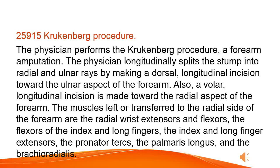Krukenberg procedure: the physician performs this forearm amputation by longitudinally splitting the stump into radial and ulnar rays, making a dorsal longitudinal incision toward the ulnar aspect of the forearm and a volar longitudinal incision toward the radial aspect. The muscles left or transferred to the radial side are the radial wrist extensors and flexors, the flexors of the index and long fingers, the index and long finger extensors, the pronator teres, the palmaris longus, and the brachioradialis.